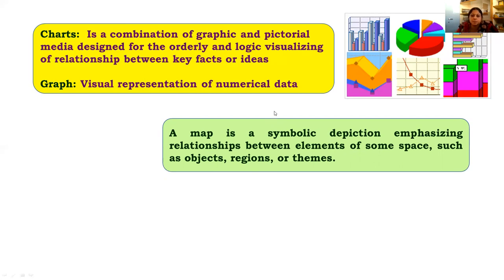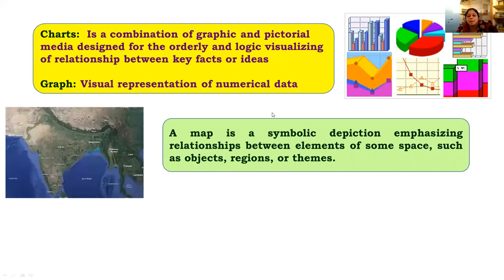The next type is a map. A map is a symbolic depiction emphasizing the relationship between elements of some space, such as objects, regions, or themes. For example, a map of India will indicate the different places and the distances between them. All these things — places, space, objects, or regions — can be indicated through a map used in our communication process.